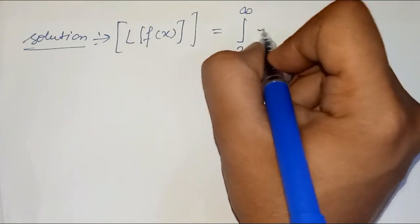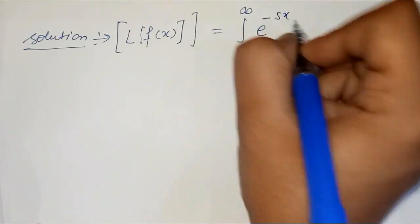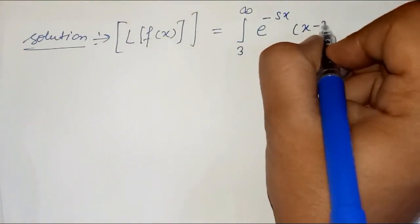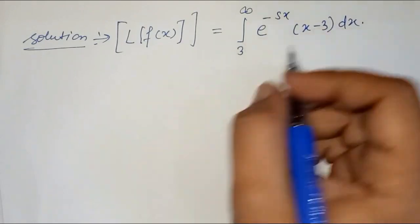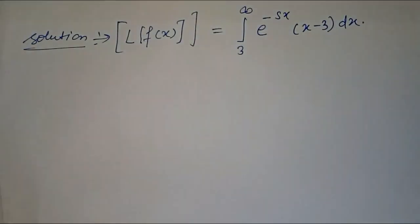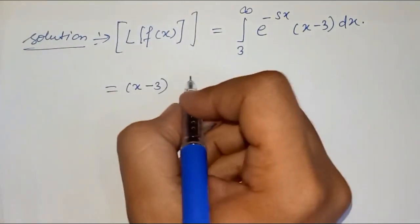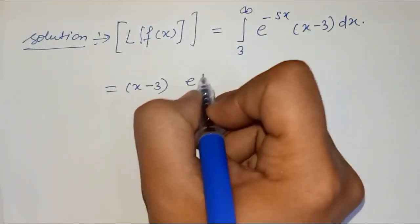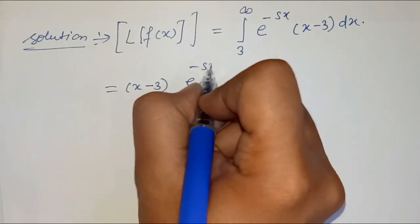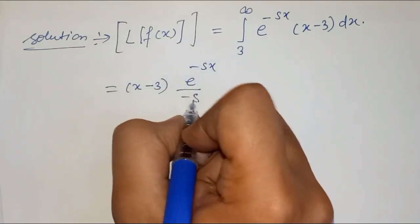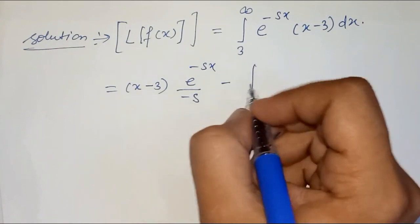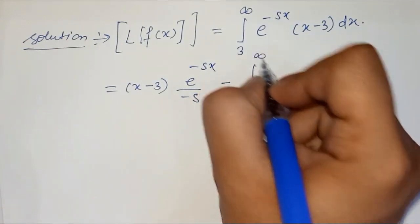We solve the integration here. First term (x-3) times integral of second term e^(-sx) upon (-s), minus integral from 3 to infinity...